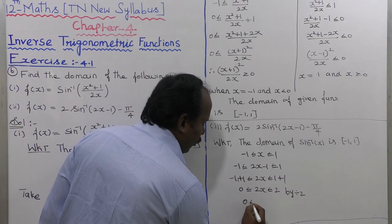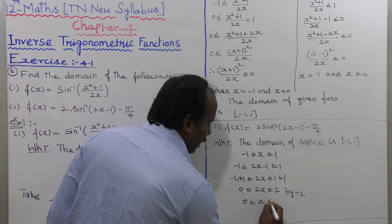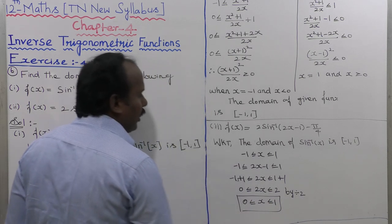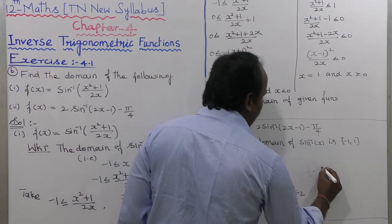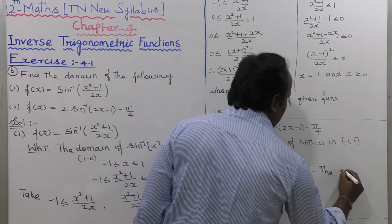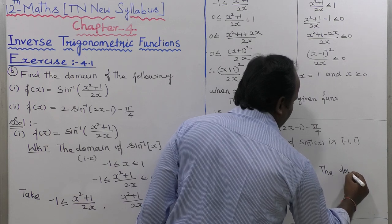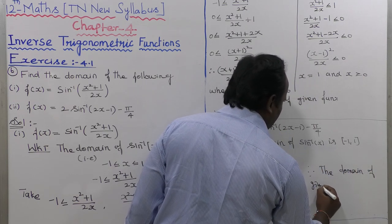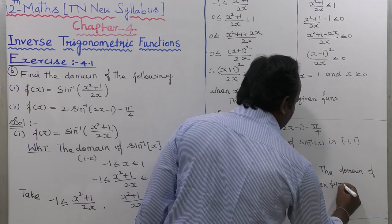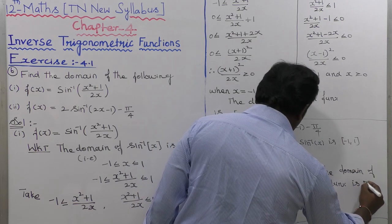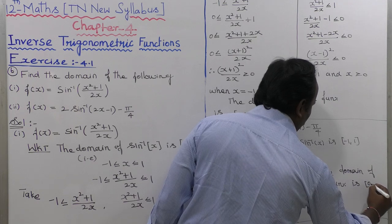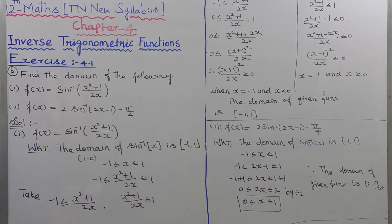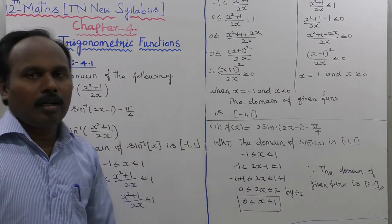Dividing the entire inequality by 2, we get 0 less than or equal to x less than or equal to 1. So the domain of the given function is the closed interval 0 to plus 1. That completes the second subdivision.